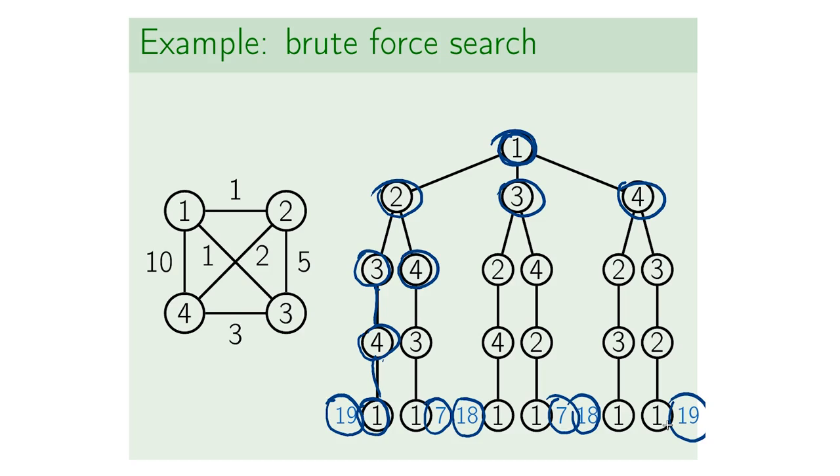So we have actually pairs of equal numbers here because the corresponding leaves, for example, this leaf and this leaf, they actually correspond to the same cycle but traversed in two different directions. We can either go this way or this way. This gives actually the same cycle, of course, but with the same total length.